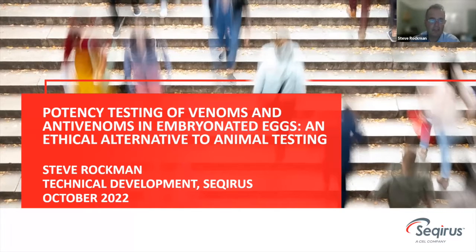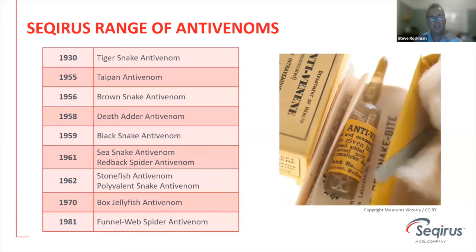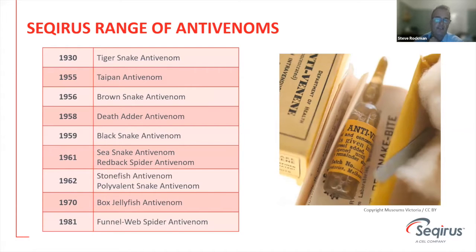Thanks very much for inviting me to present our work on alternative potency testing for anti-venoms. CSL Securus has been making Australian anti-venoms since the 1930s. This is not a new technology — it's been around for many decades. Australia is home to many different venomous snakes, with seven particular venomous snakes listed here.